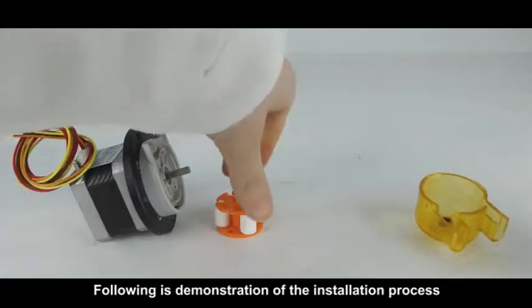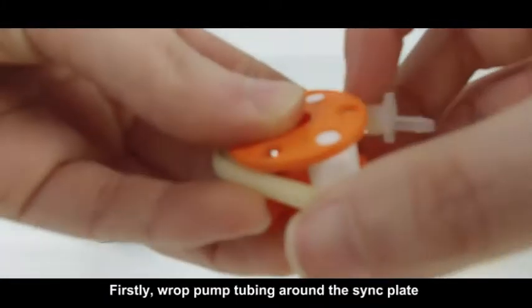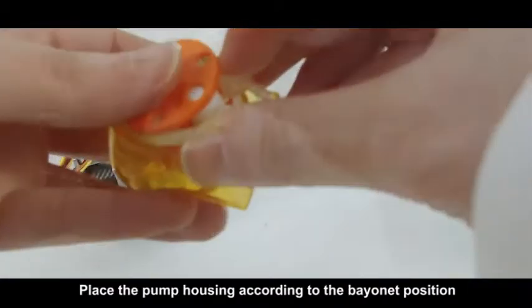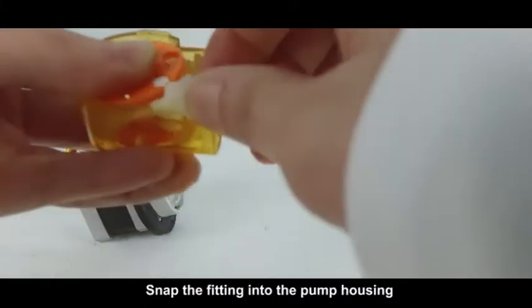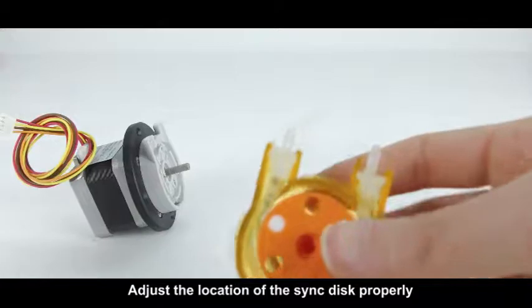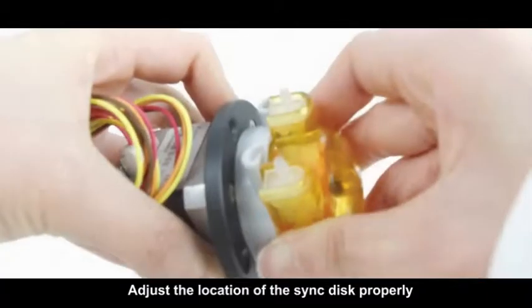Following is a demonstration of the installation process. Firstly, wrap pump tubing around the eccentric plates. Place the pump housing according to the fixed position. Snap the fitting into the pump casing. Adjust the location of the eccentric disk properly.